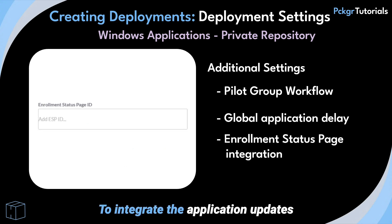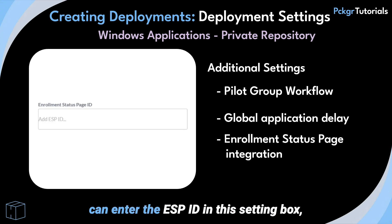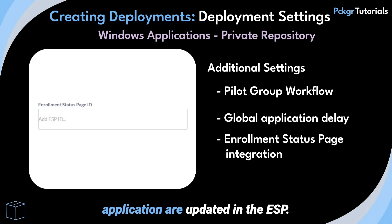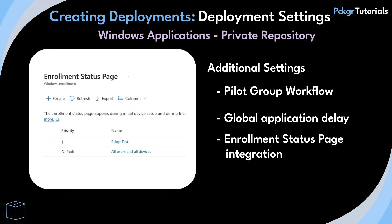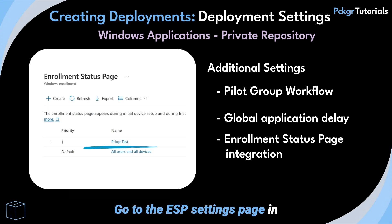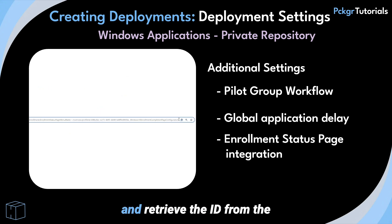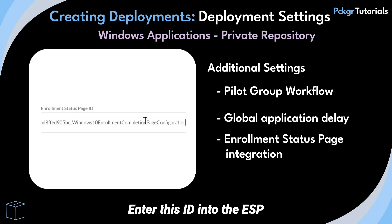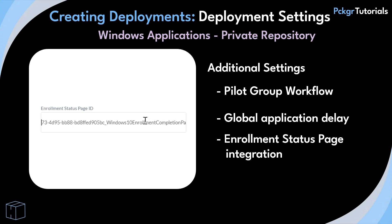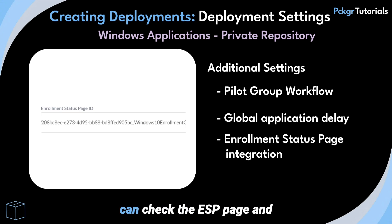To integrate the application updates with the Enrollment Status Page, you can enter the ESP ID in this setting box, ensuring the newest versions of each application are updated in the ESP. Go to the ESP Settings page in your Intune and select the profile. Access the URL for this profile and retrieve the ID from the end of the address. Enter this ID into the ESP Settings box when specifying your deployment settings. Once the app has deployed, you can check the ESP page and the application will be listed.